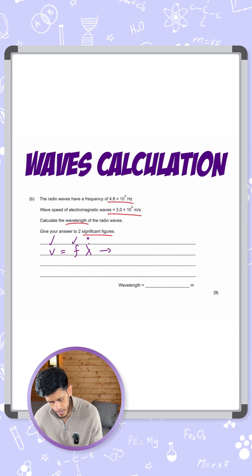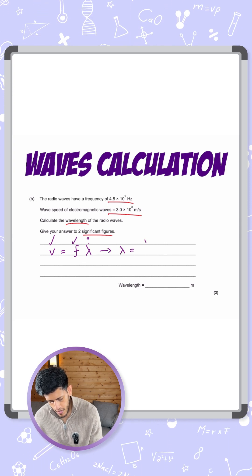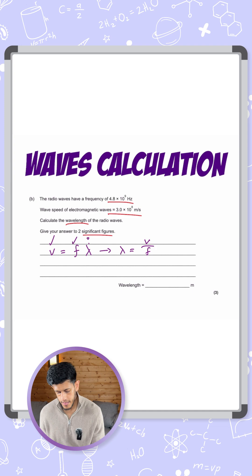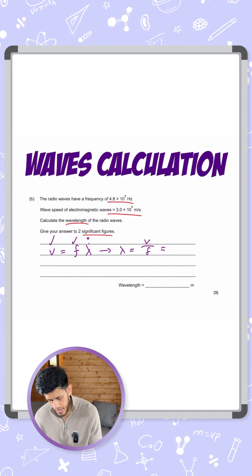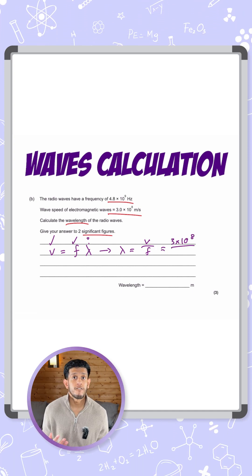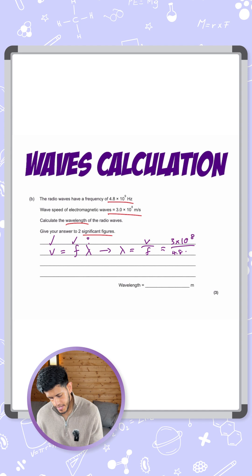So therefore, the equation is going to be lambda, or wavelength, equals wave speed divided by frequency. I'm then going to substitute in the numbers. So we have our speed of 3 times 10 to the 8, divided by our frequency, which is 4.8 times 10 to the power of 9.